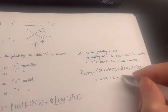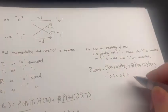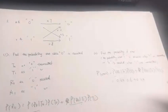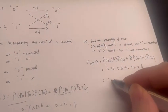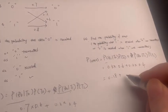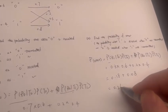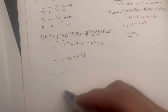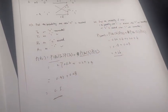So this is 0.3 times 0.6 for the first condition, and 0.2 times 0.4 for the second condition. That gives us 0.18 plus 0.08, so the result is 0.26. These two results are the answers to the questions. Thank you for watching.